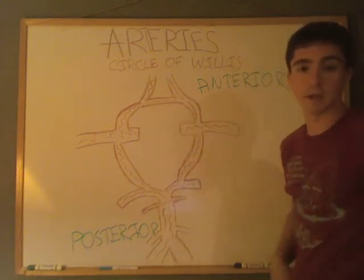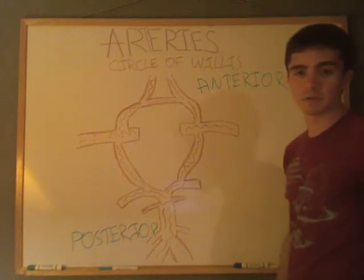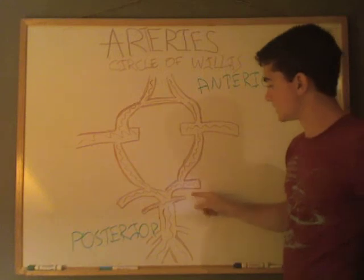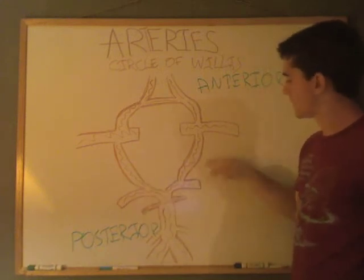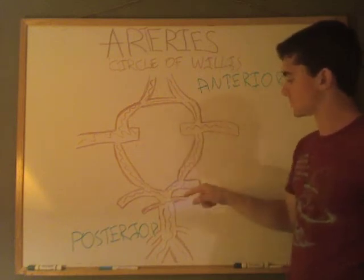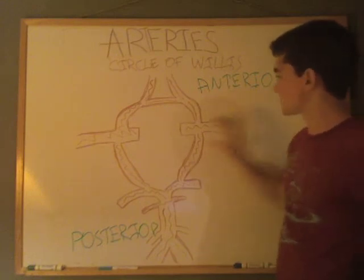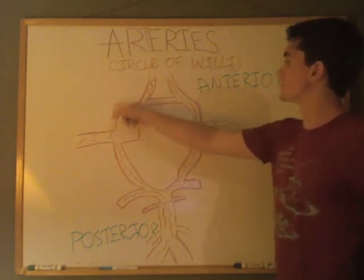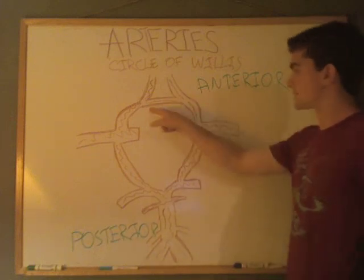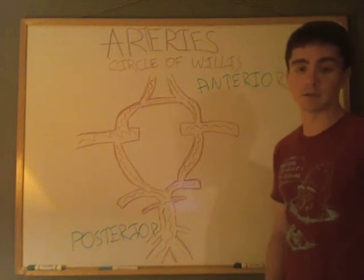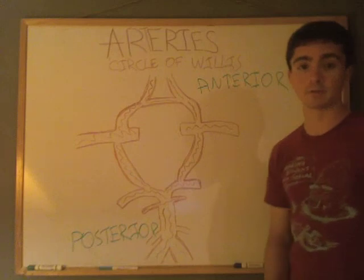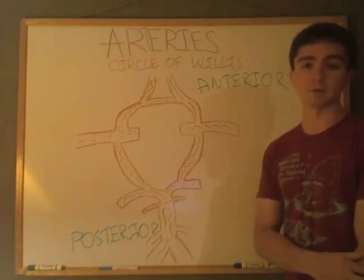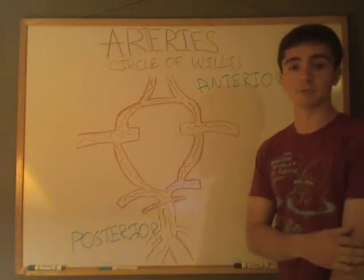Let's go over the circle of Willis one more time. The vertebral arteries come up and form the basilar artery. These structures are the posterior cerebral arteries, and joining those to the middle of the circle are the posterior communicating arteries. The structures on the outside are the middle cerebral arteries, and on the inside are the internal carotid arteries. Going toward the front are the anterior cerebral arteries, and connecting the two is the anterior communicating artery. That is it for the circle of Willis, and that covers all the arteries and veins for now. Thank you.